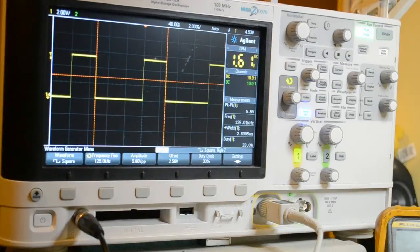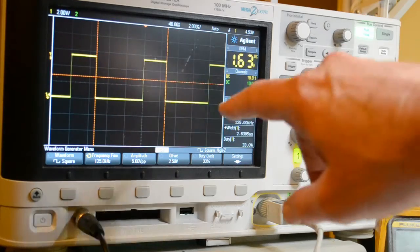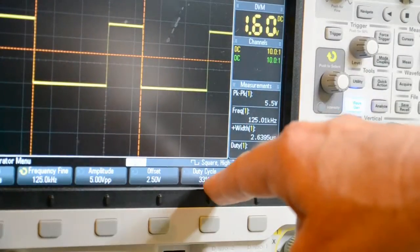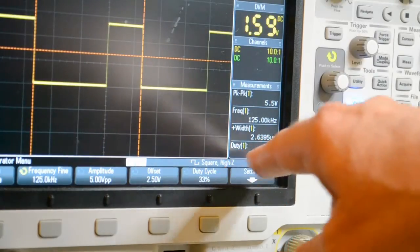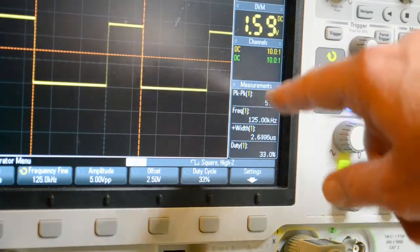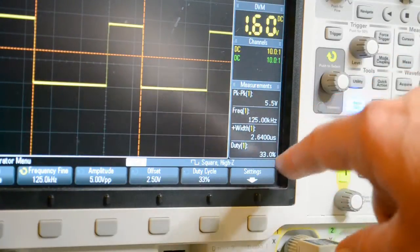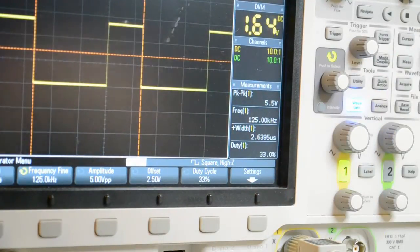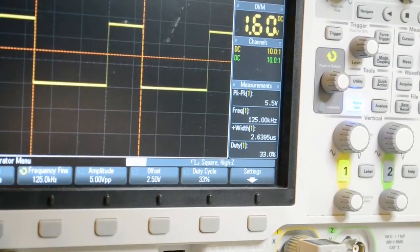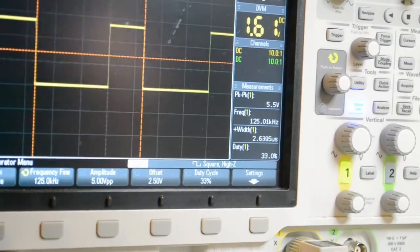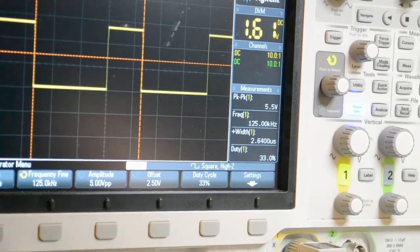Hi, this is a quick update to the wireless charger. First of all, you see I've got the scope still set up: 33% duty cycle, pulse width is 2.6 microseconds, frequency is 125 kilohertz, peak-to-peak 5.5 volts. Nothing changed from the previous wireless charger except for the charging coils.